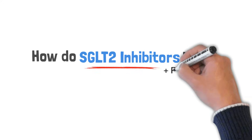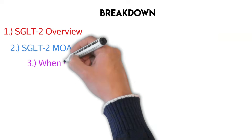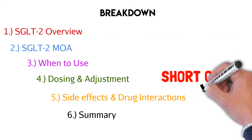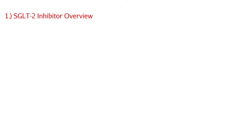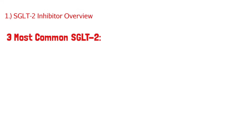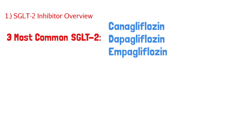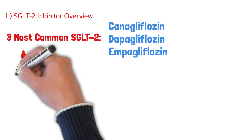Let's talk about SGLT2 inhibitors, how they work, plus some pharmacology. Here's everything we'll talk about, with timestamps down below and a short quiz at the end. To truly understand how these SGLT2 inhibitors work, we need to do a quick overview. We'll start with the three most common SGLT2 inhibitors you might come across: canagliflozin, dapagliflozin, and empagliflozin. These are the most common, but there are others on the market.